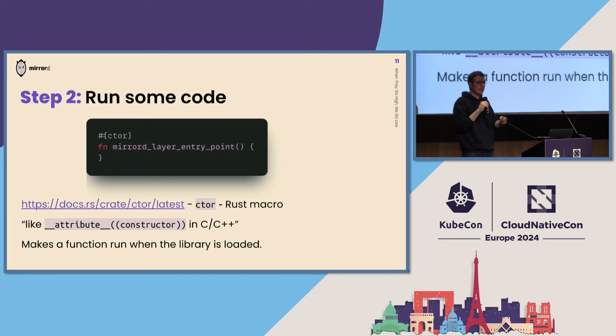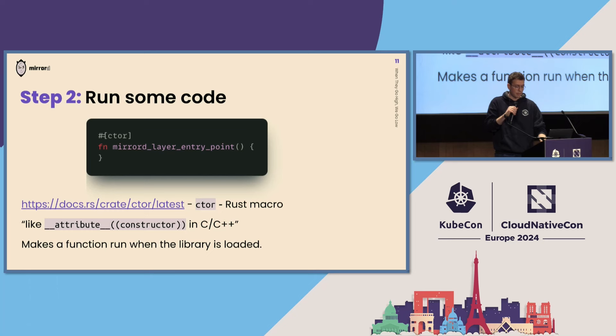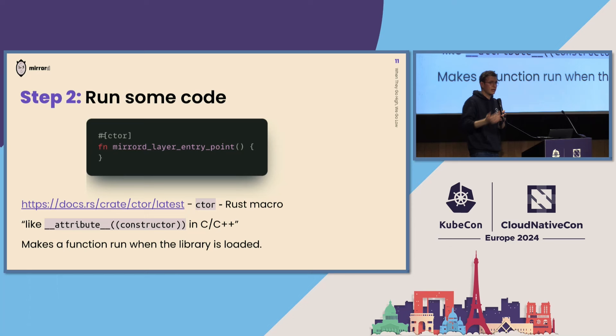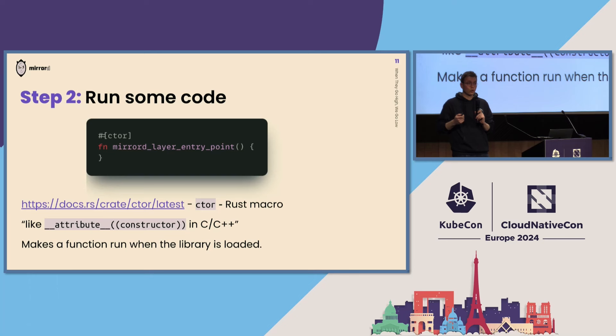Now our code is in there, but we need it to run. Just by virtue of being in the process, our code doesn't actually run, as the user's application doesn't call it and shouldn't be aware of mirrord. So to ensure our code runs, we use another feature dynamic linkers offer — sometimes called a constructor. Code placed in a specific section of a binary will be executed on startup. mirrord puts some code in that section, and that code gets executed directly on process start.